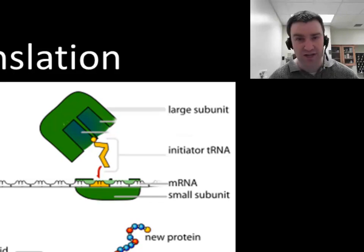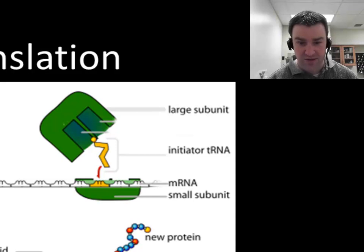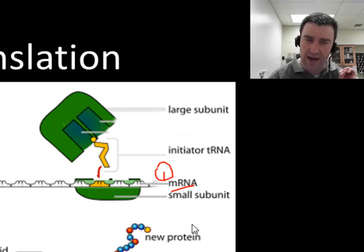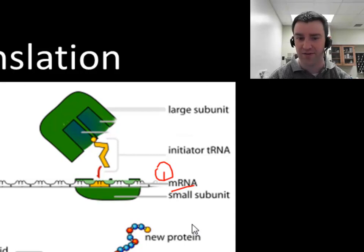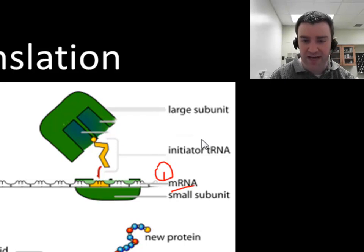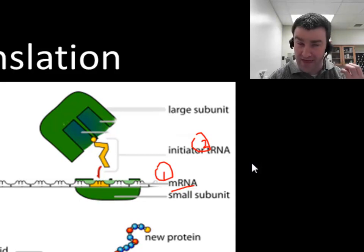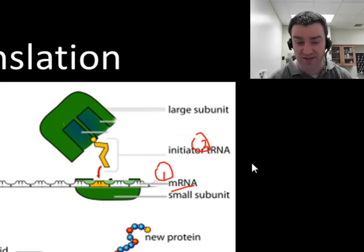There are three major players in translation, and all of them are RNAs. We've got the messenger RNA, which carries the code and calls for amino acids to come in the right order. We've got transfer RNAs, or tRNAs, so called because they transfer the one amino acid they carry to the correct place — they transfer it to the ribosome.